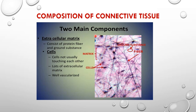There are two main components of connective tissue: the extracellular matrix and the cells. The extracellular matrix comprises the ground substance and the fibers. Unlike epithelial cells, which are closely adherent to each other, connective tissue cells are far apart from each other with a lot of extracellular matrix in between them, and the tissue is highly vascularized.